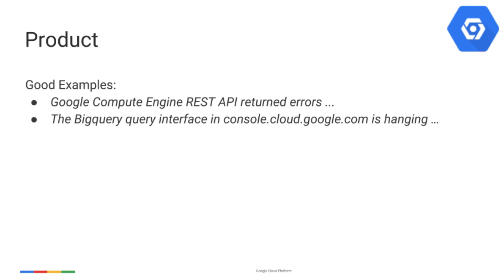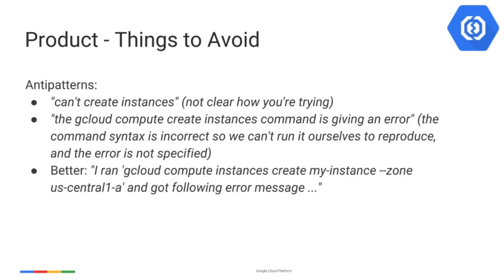Describe the behavior you're observing and what you expected, then show us what you see. Be specific about the actions you have taken as well as the syntax of any commands used. A phrase like 'can't create instance' doesn't tell us whether you used gcloud compute, the developer console UI, or called it from your own code. The clearest way to communicate this would be something like: 'I ran gcloud compute instances create my-instance --zone us-central1-a and got the following error message.'